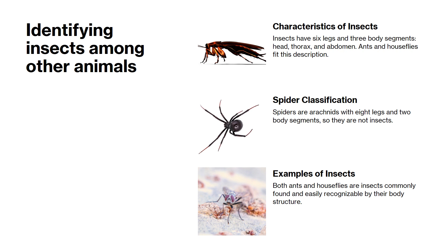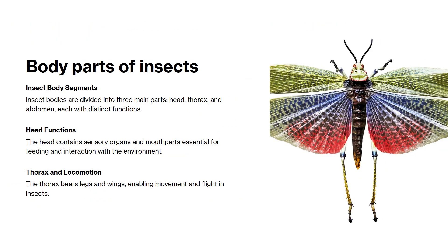Can you tell which creatures are insects? Ants and houseflies are insects, but spiders are not. Learning to distinguish insects from other animals is an important skill. The body of an insect is divided into three main parts: the head, thorax, and abdomen. The head contains sensory organs and mouth parts, while the thorax bears the legs and wings for movement and flight.